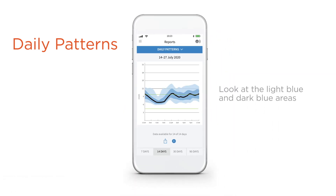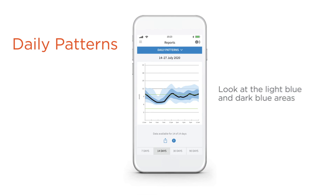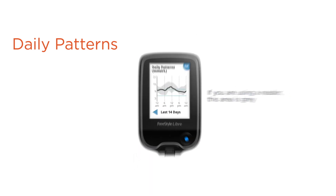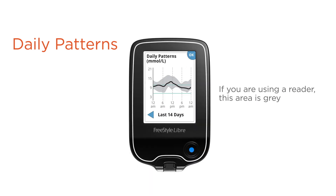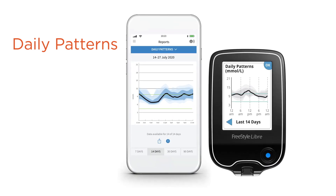Look at the light blue and dark blue areas. If you are using a reader, this area is grey. You want to keep these areas narrow, meaning fewer highs and lows. It helps you see where you can reduce low glucose events, increase time in target, and reduce your ups and downs.